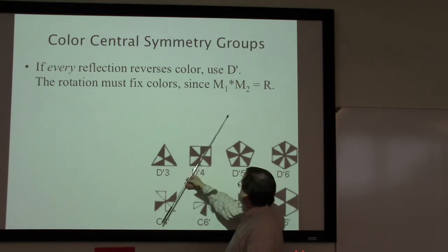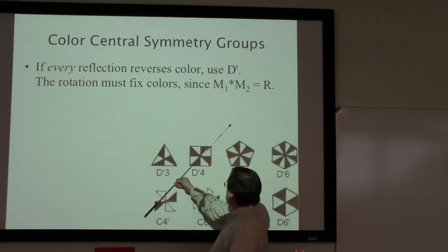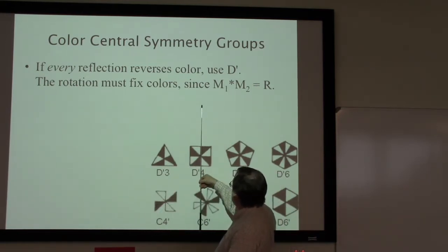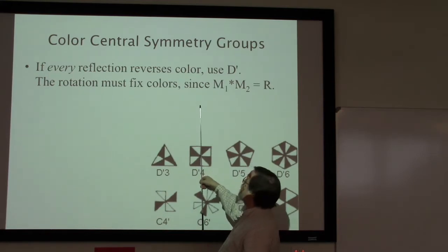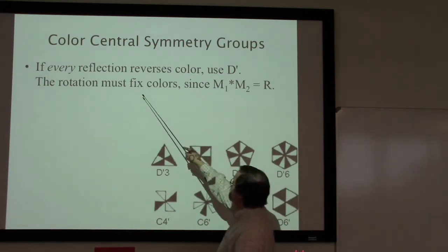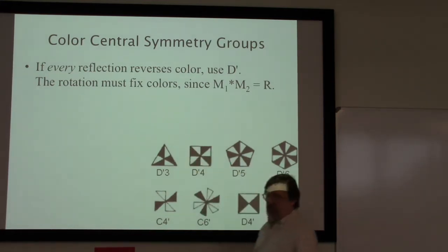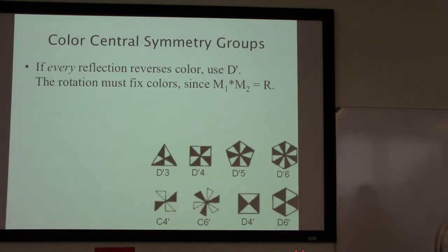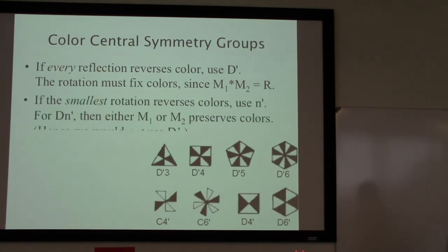Leonardo da Vinci's theorem showed us that combining one reflection with another gives a rotation of one-fourth. So if this reflection is reversing and this reflection is reversing, then that rotation of one-fourth must preserve the colors because of that particular combination. Now let's take a look at what happens if the rotation reverses colors, which means we're not in this first case.